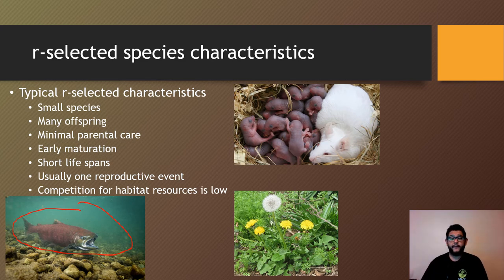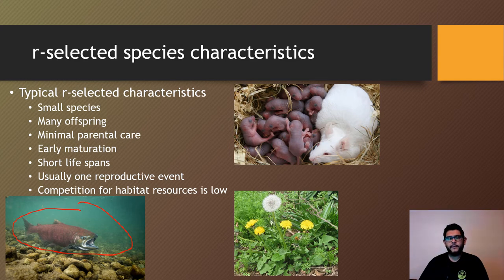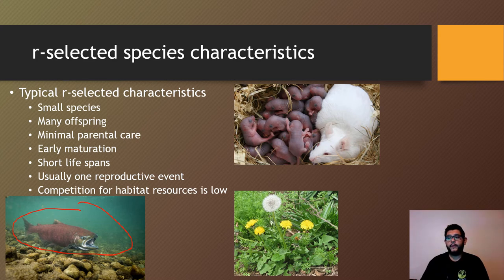R-selected species usually have one big reproductive event where the goal is to get as much of the next generation fertilized and born as possible. That allows them to be as successful as they can be, and they don't have to deal as much with competition for habitat because they tend to move quite a bit. Salmon, for instance, are anadromous — they live in the ocean and come to freshwater to spawn, then go back out, so they're not really worried about habitat resources.